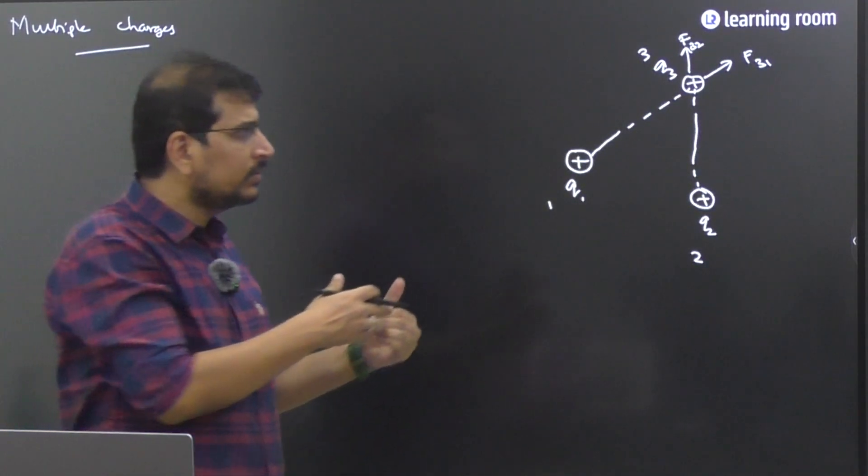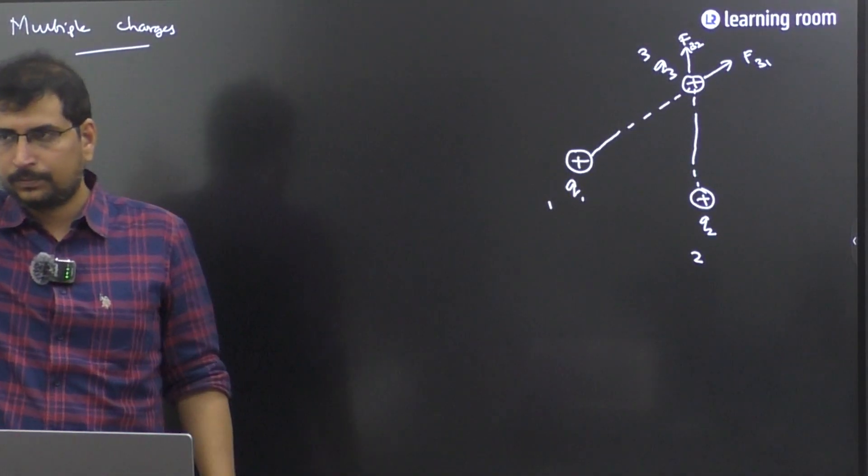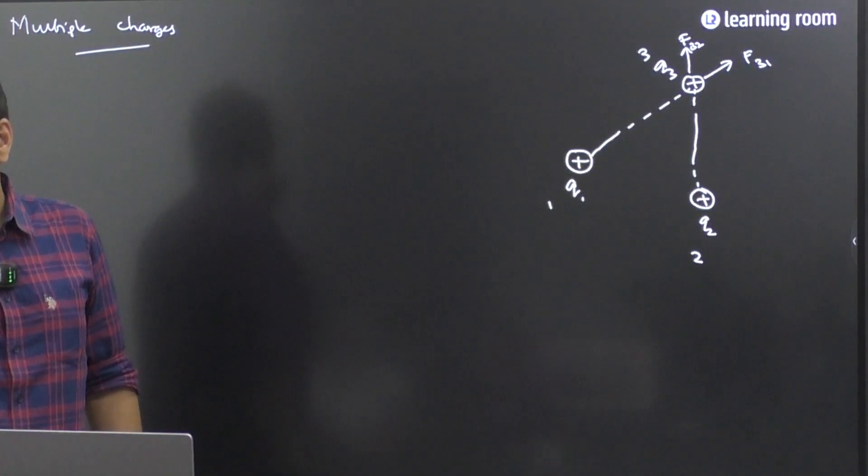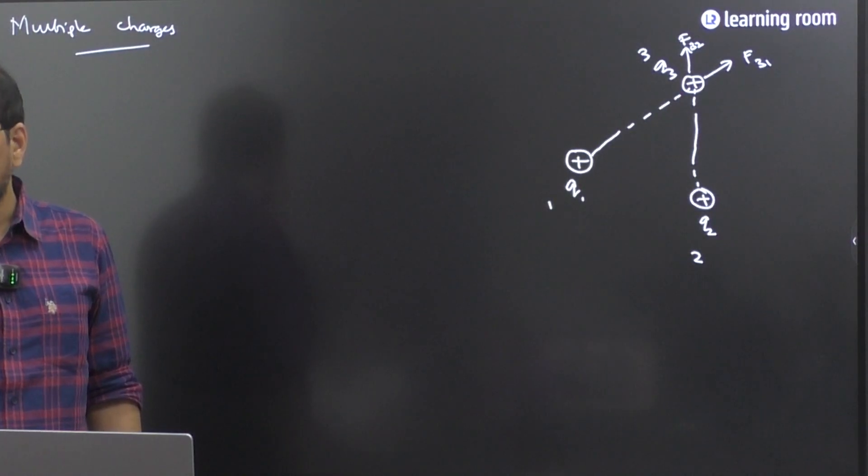Like this, it is not necessary you need to have any 3 charges. It can go to 4 also. Then it can go to 5, 6, anything. But how do you calculate? By finding the resultant. The resultant is obtained by, how do you add that?